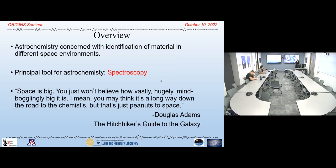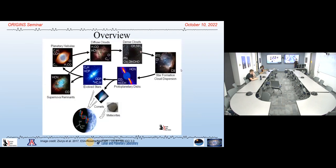I like this quote from Douglas Adams: space is big. You just won't believe how vastly, hugely, mind-bogglingly big it is. My background involves a lot of remote observations because there are so many different environments we cannot send sample return missions to — a lander, a rover — it's just out of our reach so far. I want to give an overview of these different sources which we can study with radio observatories to find chemical complexity in regions we can't possibly visit for direct sample collection.